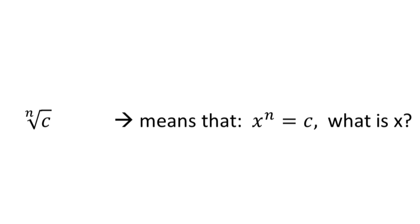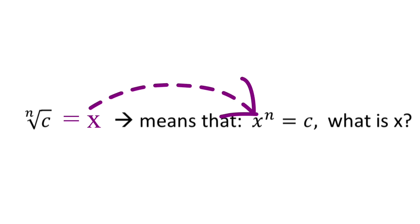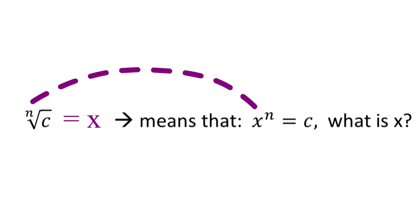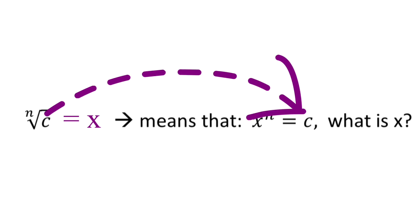In general, if we are given the nth root of c, we can equal that to x and change it to its exponential form: x to the power n equals c. Our x becomes the base, the index n becomes the exponent, and the radicand c becomes the answer to the exponential form.